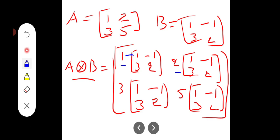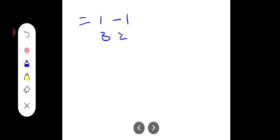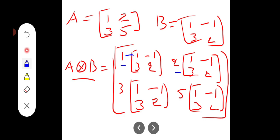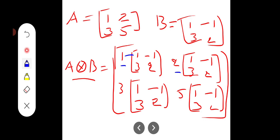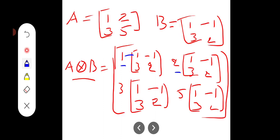2 into 1 is 2, 2 into -1 is -2, 2 into 3 is 6, 2 into 2 is 4. Therefore [2, -2; 6, 4]. What is the next value?